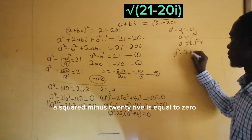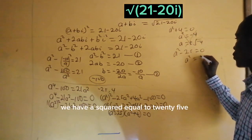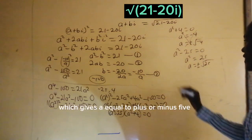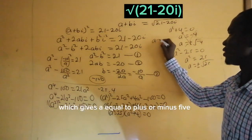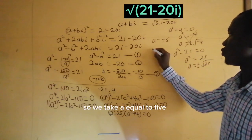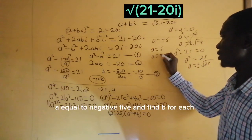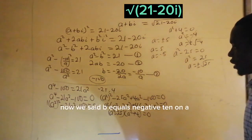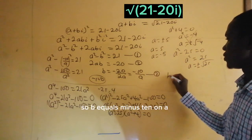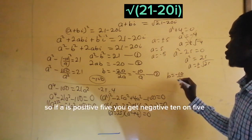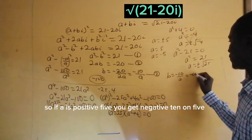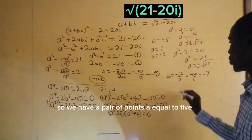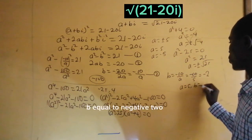Now let's take the second factor: a squared minus 25 equal to 0. We have a squared equal to 25, then a equal to plus or minus the square root of 25, which gives a equal to plus or minus 5. So we take a equal to 5 and a equal to negative 5, and find b for each. We said b equal to negative 10 over a, so if a is positive 5, we get negative 10 over 5, which gives us negative 2. So we have the pair a equal to 5, b equal to negative 2.